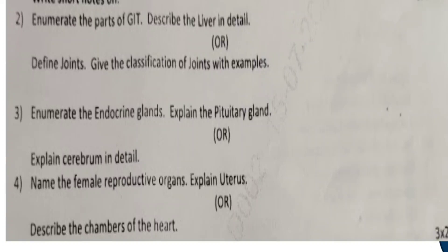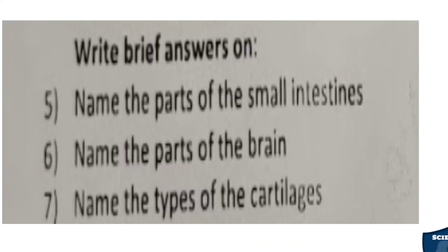Next, we will move on to very short answers — that is 2-mark questions, also called brief answers. All questions must be answered; each carries 2 marks — 3 into 2, that is 6 marks. Question 5: Name the parts of the small intestine. Question 6: Name the parts of the brain. Question 7: Name the types of cartilages.